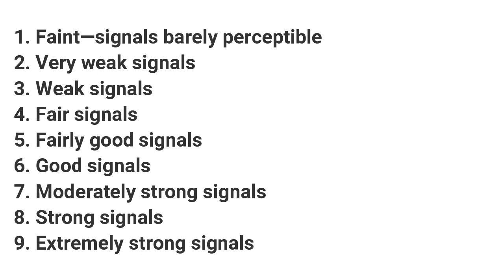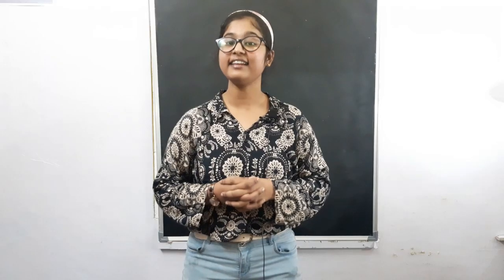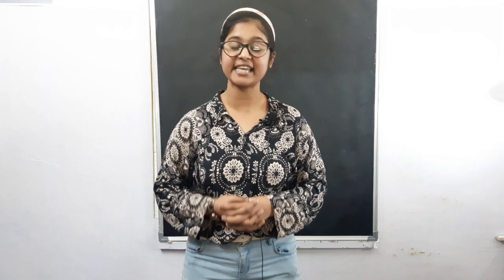Five: fairly good signals. Six: good signals. Seven: moderately strong signals. Eight: strong signals. Nine: extremely strong signals. And the last component is T, or tone, also measured on a scale of 1 to 9.